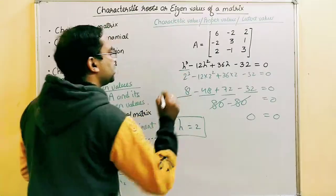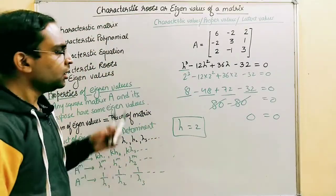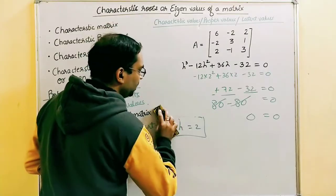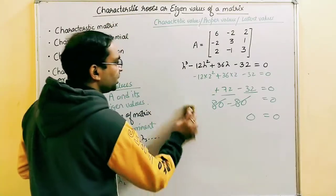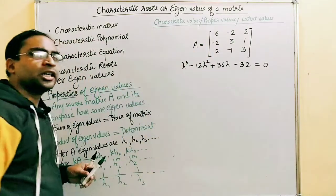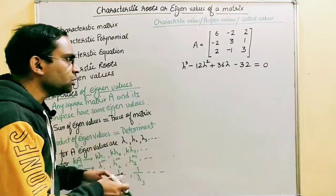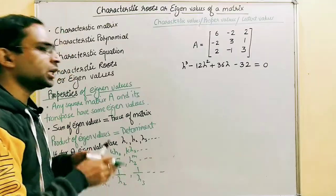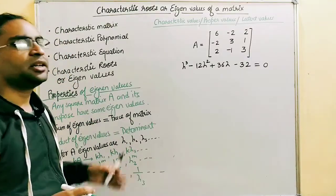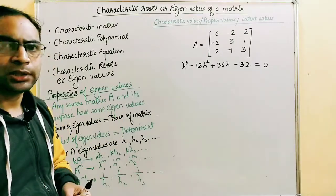We have three characteristic roots, so we need to find the other two as well. To do this, I will reduce the cubic equation into a quadratic equation using the identified root lambda equal to 2, and from that quadratic equation we can easily find the remaining two roots.